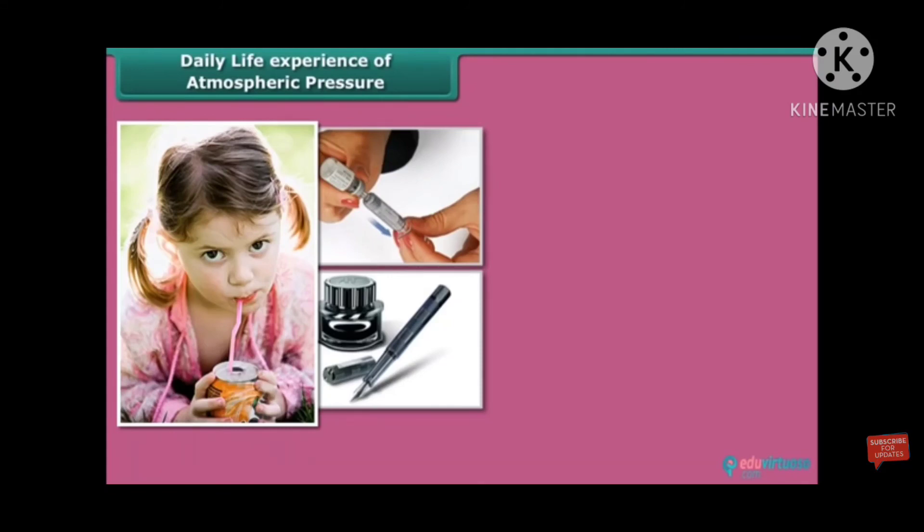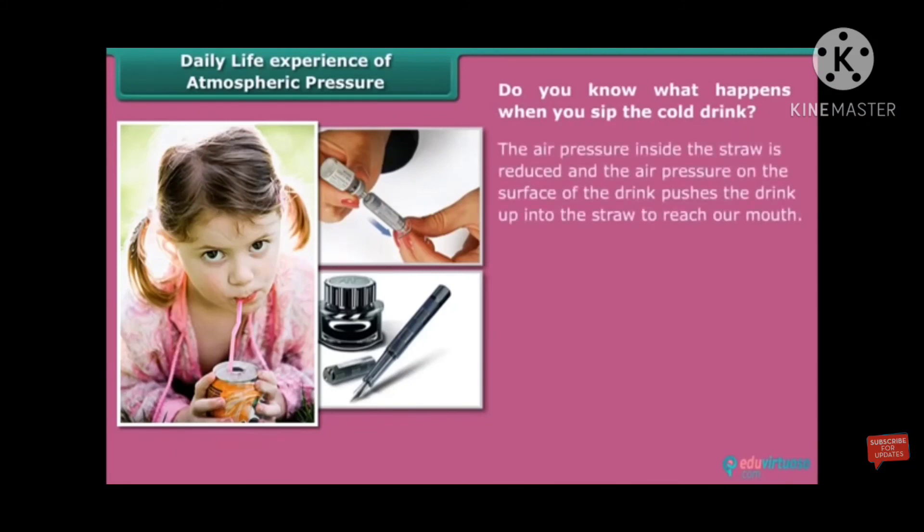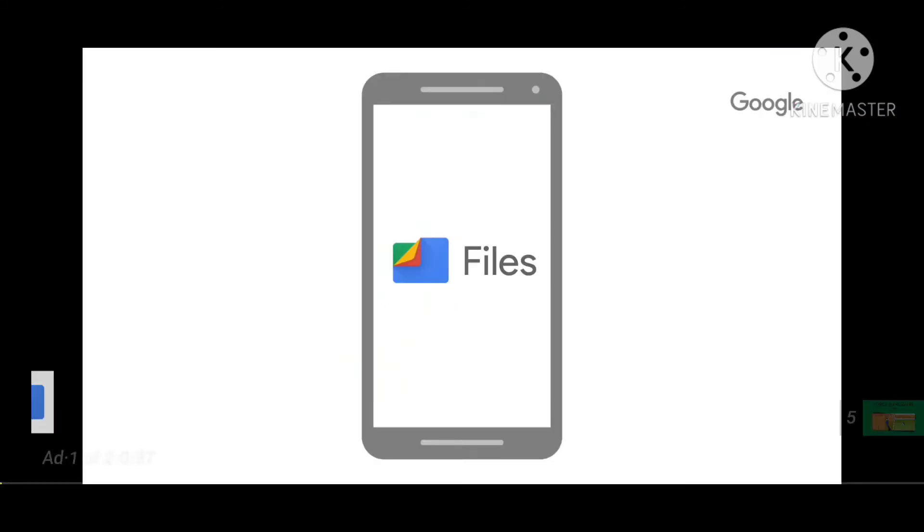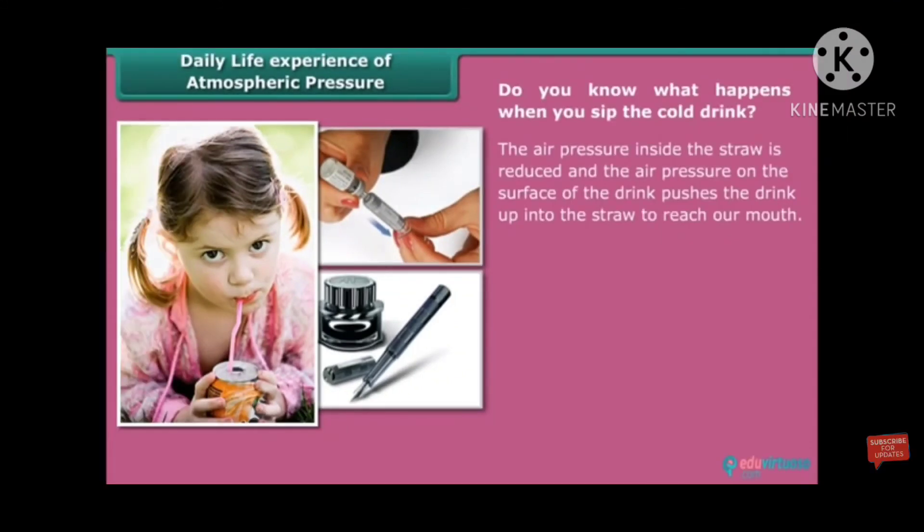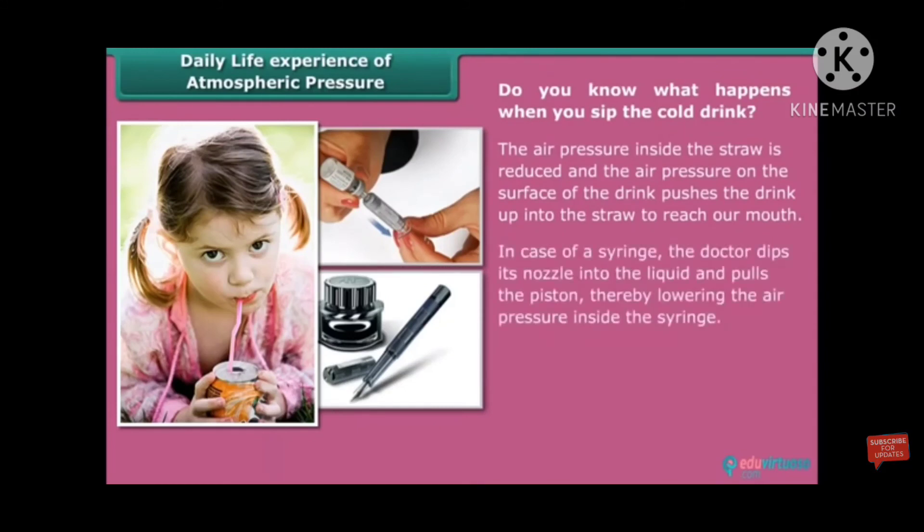You just imagine yourself, when you bring a tin of juice to your home, you will sip it through the pipe. Then, you are opposing the atmospheric pressure which is exerted on the liquid. And whenever the air pressure inside the straw is reduced, the air on the surface of the drink pushes the drink up into the straw to reach our mouth.